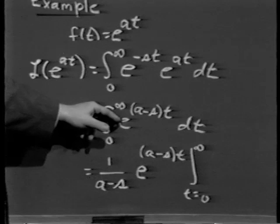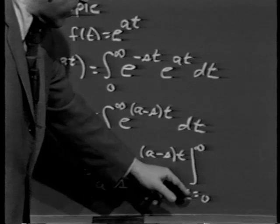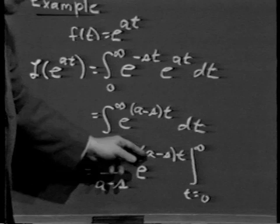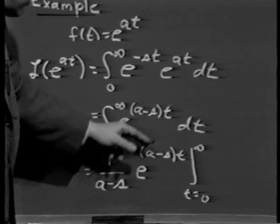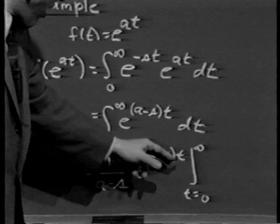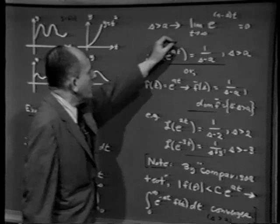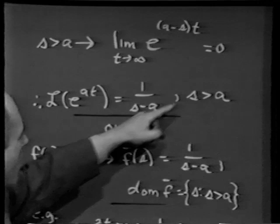Once s is greater than a, the exponent a minus s is negative, so as t goes to infinity this term goes to 0. The upper limit drops out, and the lower limit gives e to the 0 equals 1. Since we subtract the lower limit, we get minus 1 over a minus s, which equals 1 over s minus a. Therefore, the Laplace transform of e to the at is 1 over s minus a, provided s is greater than a. For example, the Laplace transform of e to the 2t is 1 over s minus 2, and the Laplace transform of e to the minus 3t is 1 over s plus 3.